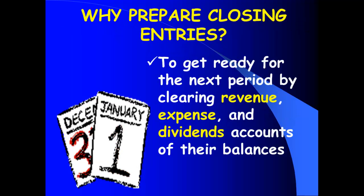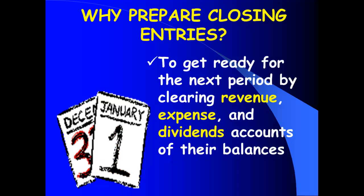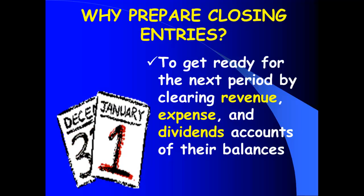There are two reasons that we prepare closing entries. Number one, there are some accounts we need to zero out — get them off of our books so we can start the next accounting period with a zero balance. For example, what if I told you I had a million dollars revenue in the year 2013? Would I want to start the year 2014 saying I have a million dollars revenue? No. Instead, we want the income statement for 2014 to cover 2014 only. We need to wipe the results of 2013 off of our books.